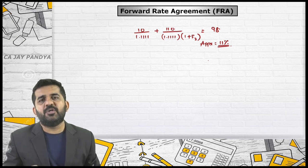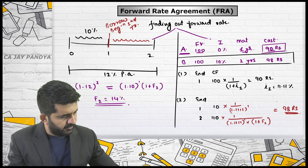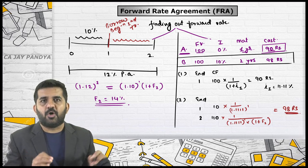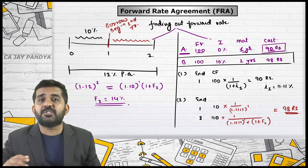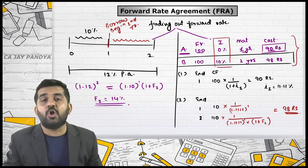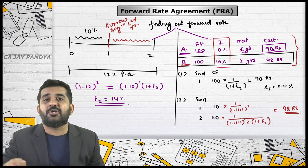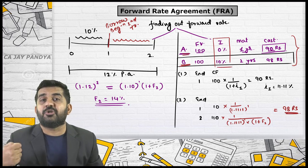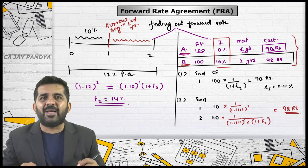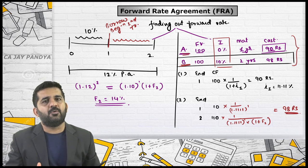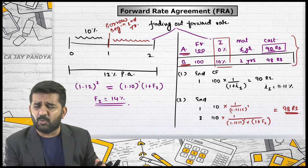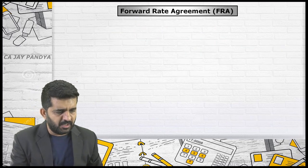These are the two methods to find the forward rate: when the rate of interest is directly available, and when it is not directly available — where there is implicit interest you need to consider. There is no third method. Only these two methods apply when finding out the forward rate.